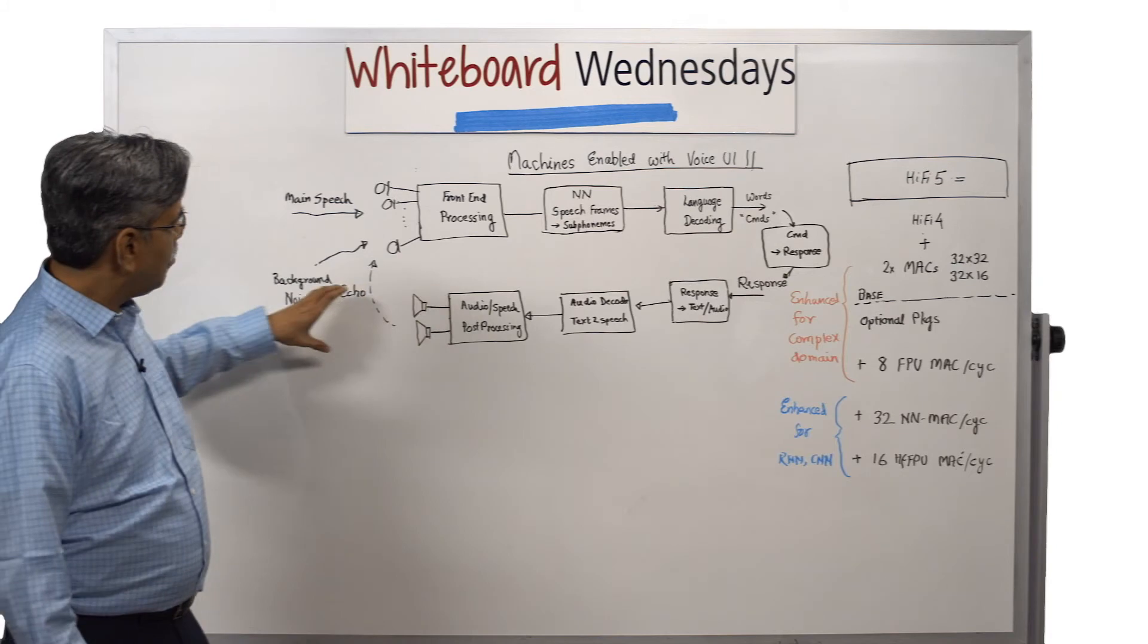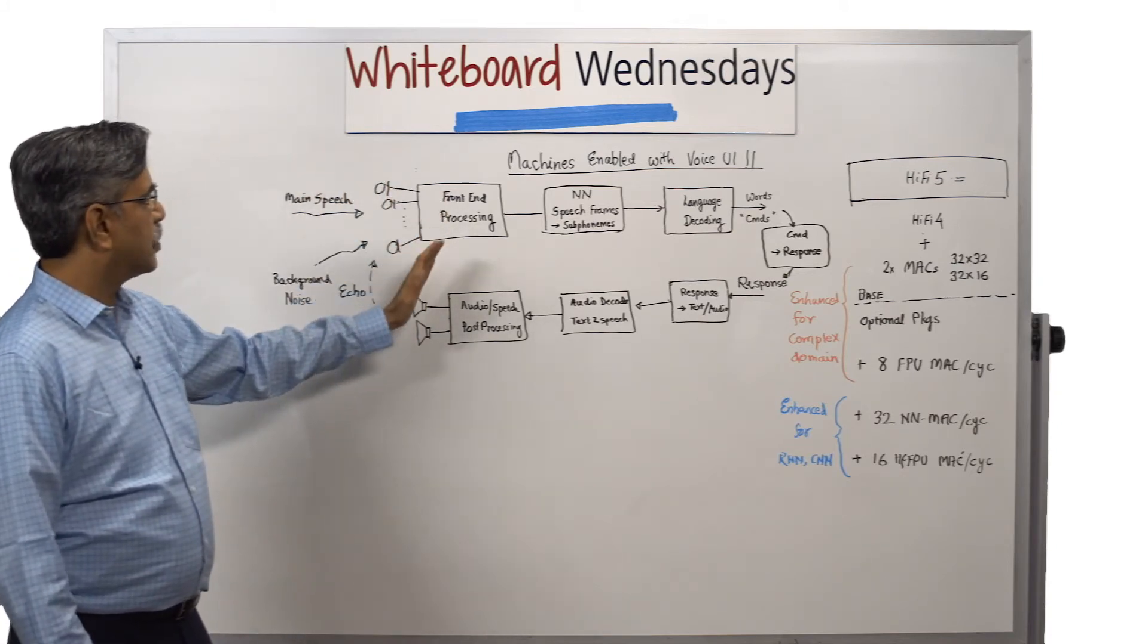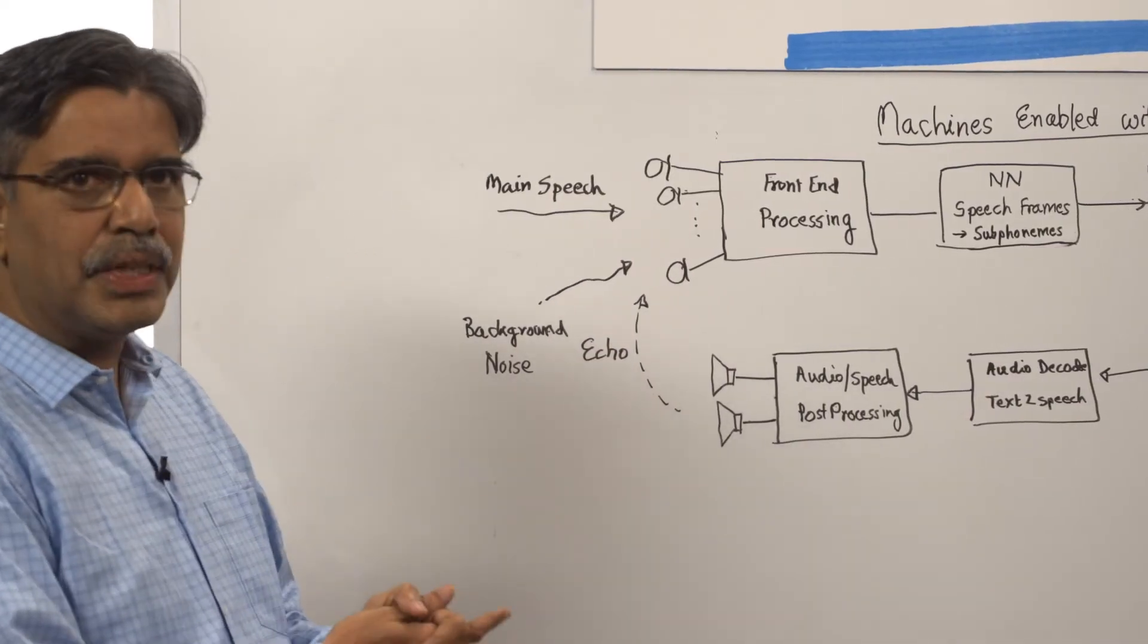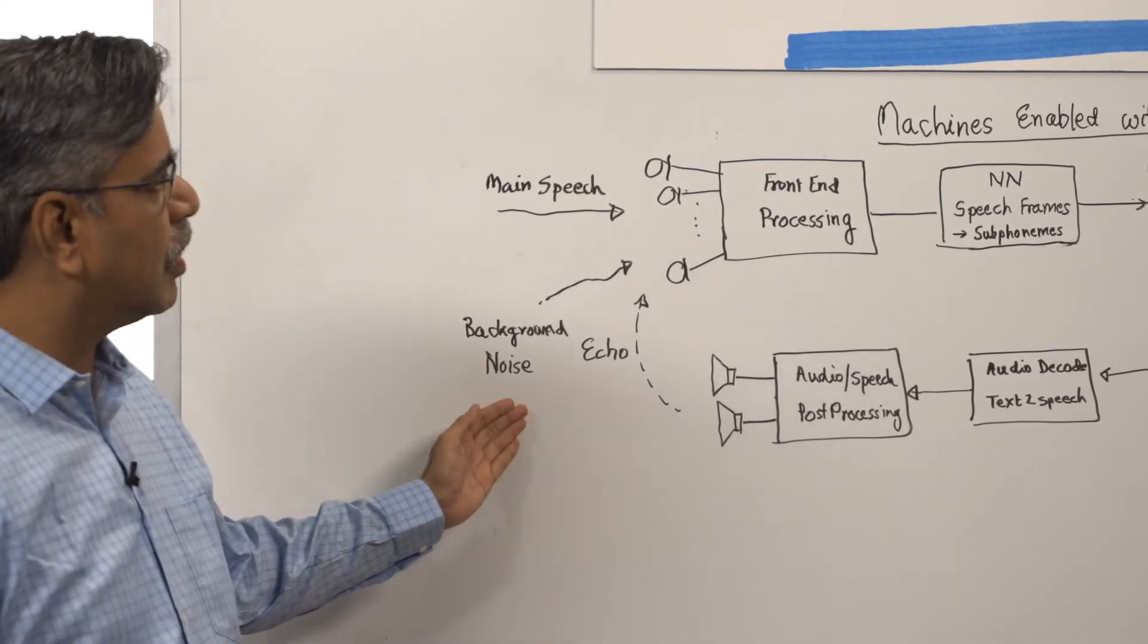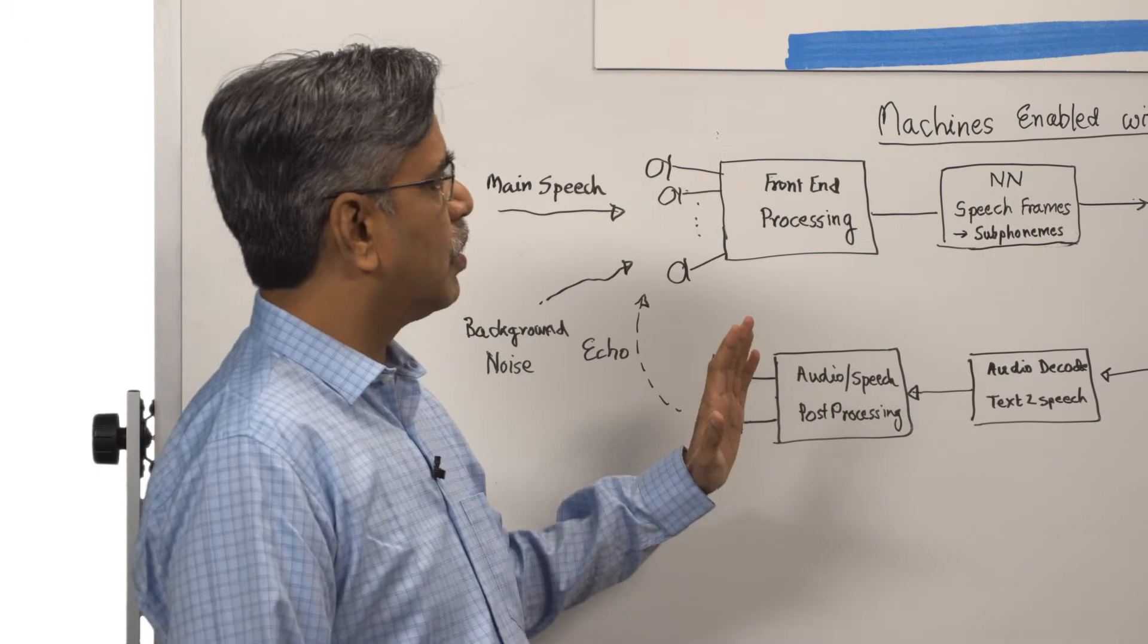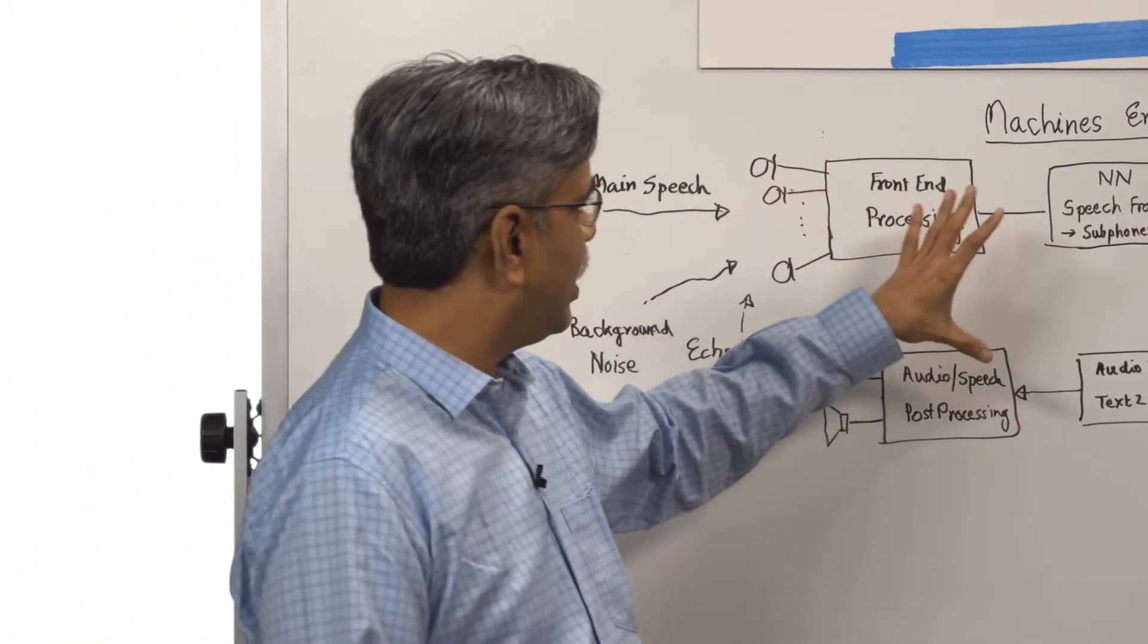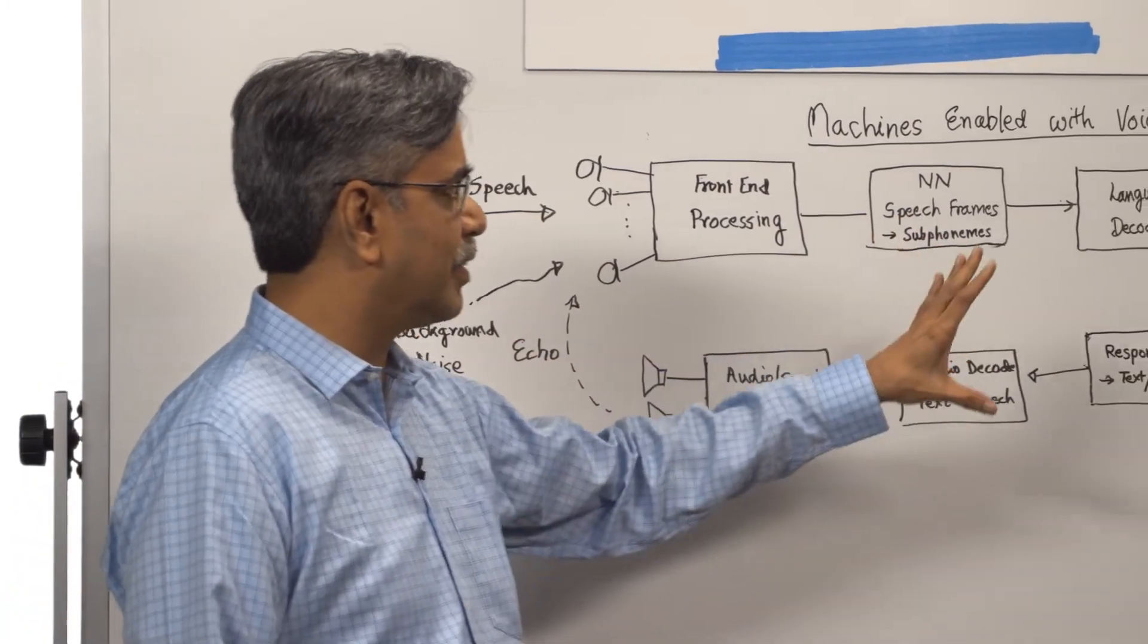When you are playing back and trying to speak again, there will be an echo form. So the front-end processing has to be very smart and very complicated to really remove the echo, reverb, noise, background noise. HiFi 4 is the best advanced processor right now in the market to really tackle well the front-end processing, post-processing, audio decoding, and everything.